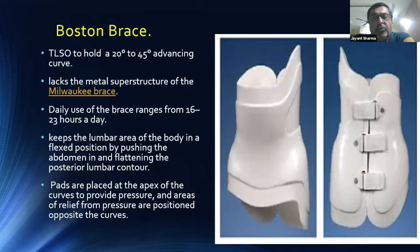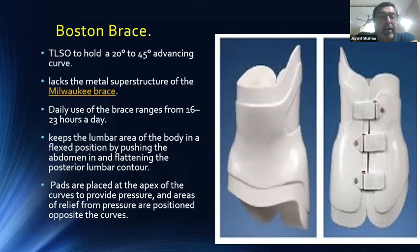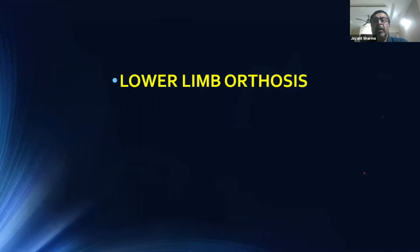The Boston brace is also a TLSO and is an ideal brace for girls, as scoliosis predominantly affects the female population aged 15 to 30 years who may not be comfortable with the Milwaukee brace. It holds curves of 20 to 45 degrees and lacks the metal support. Daily brace use should be 16 to 23 hours. It keeps the lumbar area in a flexed position by pushing the abdomen in and contouring the posterior contour. Pads are placed at the apex of the curve to provide three-point pressure.